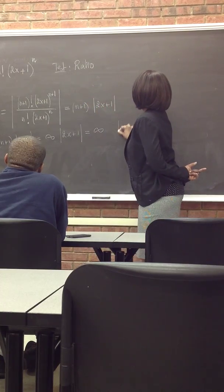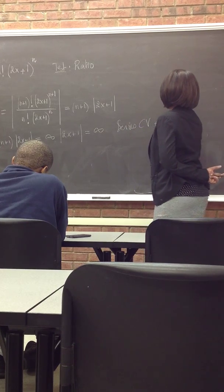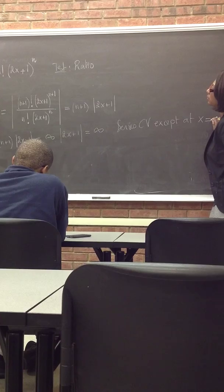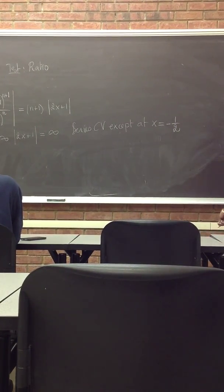But here we said the power series always converges at its center. So here, series diverges except at x equals negative 1/2. So whenever the limit is infinity, it's going to converge at the center because we determined from the beginning that the series always converges at its center.